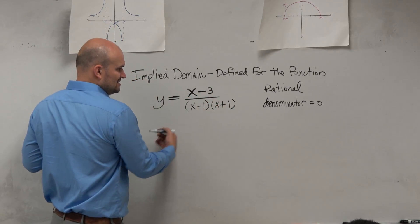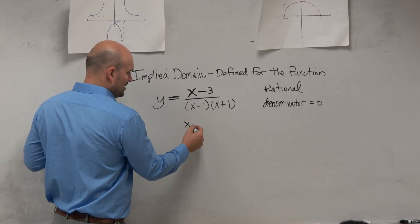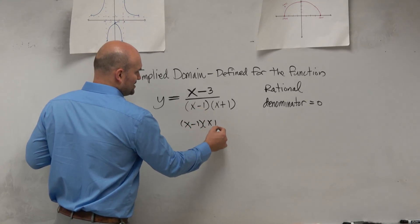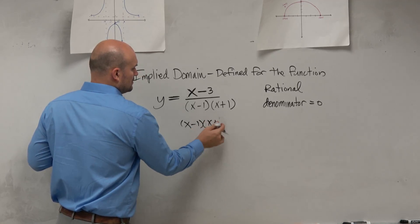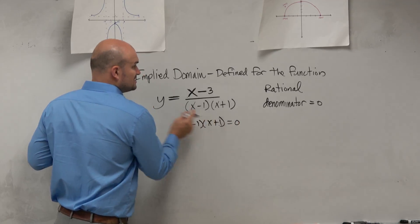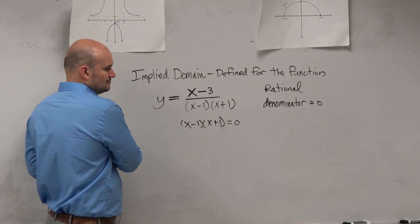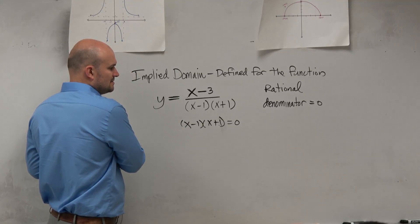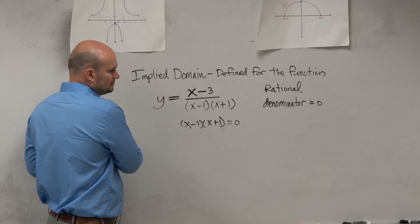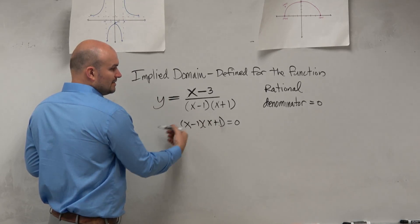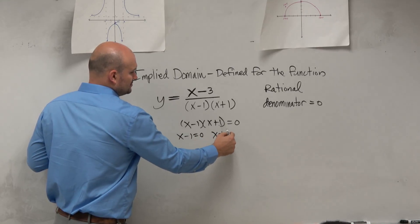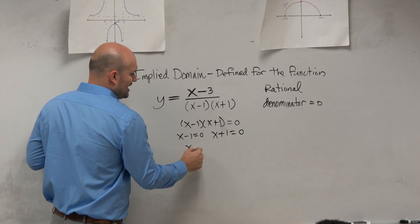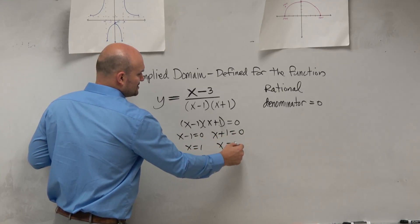And this one's fairly simple. I already had it factored for you. You're welcome. So x minus 1 times x plus 1 equals 0. And now we can apply the zero product property. So we can set both factors equal to 0. So therefore, x equals 1 and x equals negative 1.